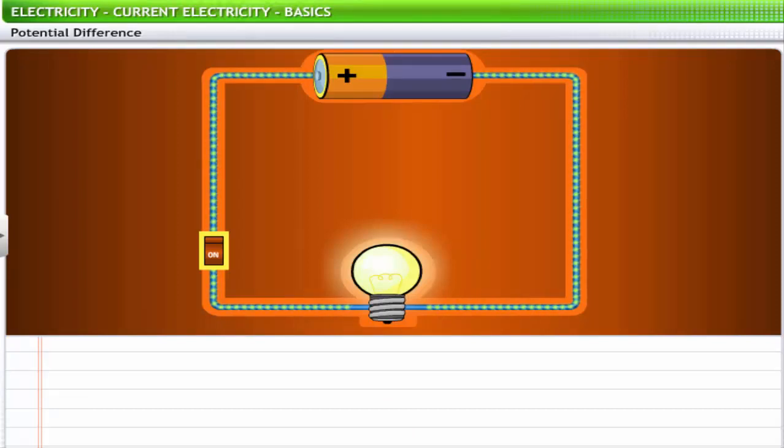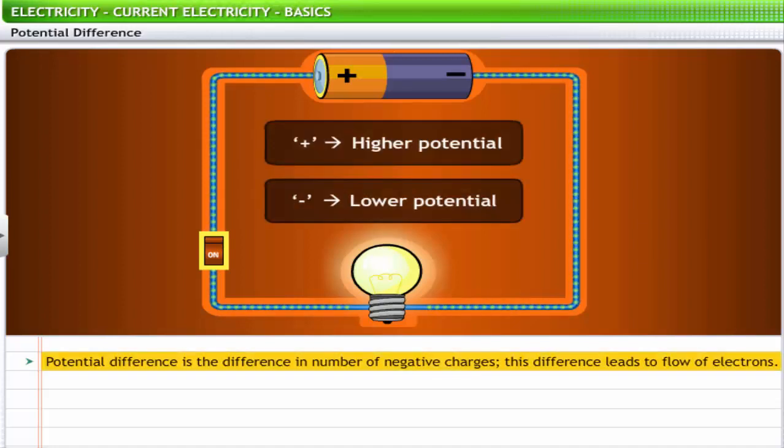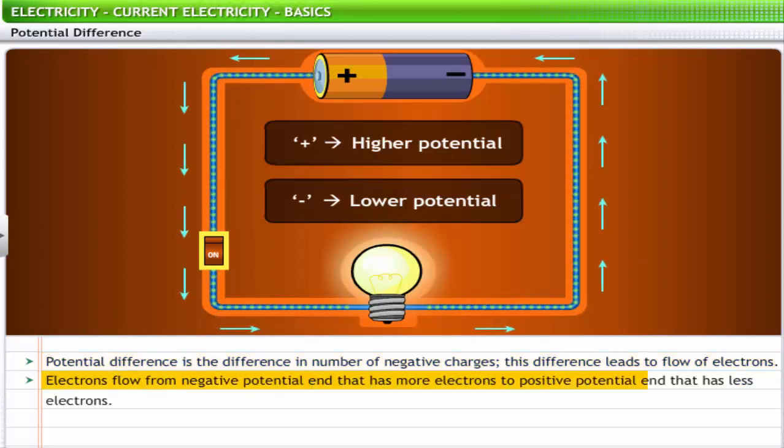Electric current is a result of potential difference across two points in a conductor. Potential difference is the difference in number of negative charges that leads to flow of electrons. Electrons flow from negative potential, that is, the point with more electrons to positive potential, that is, the point with less electrons. Whenever there is a potential difference, the current flows from the positive potential end to the negative potential end.